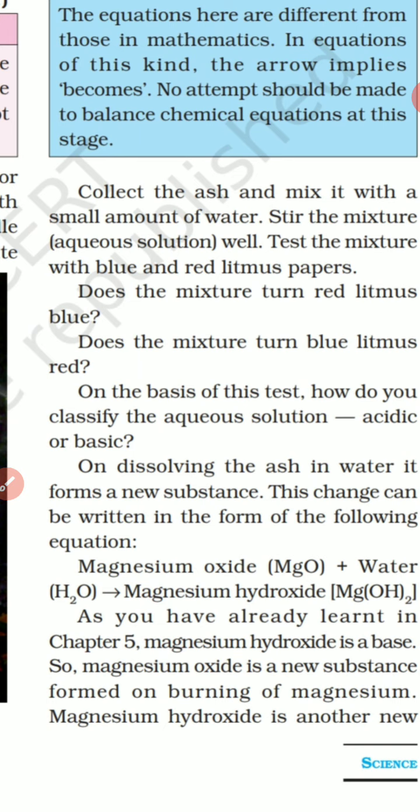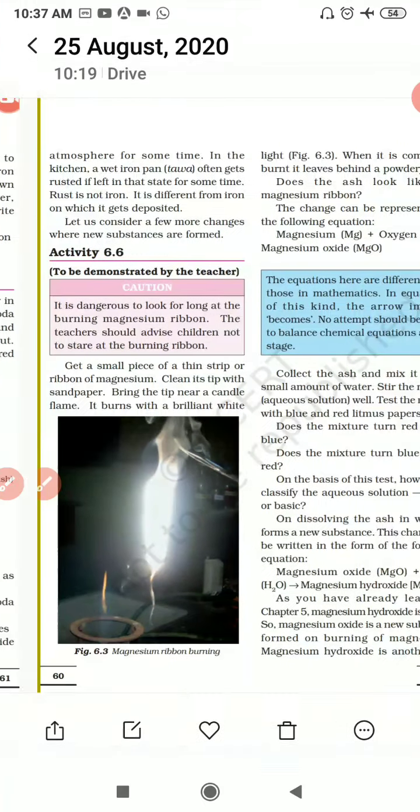By burning, by giving a change, this is called a chemical change. What is it called? It is a chemical change. Another example, activity 6.7, was also given for you.